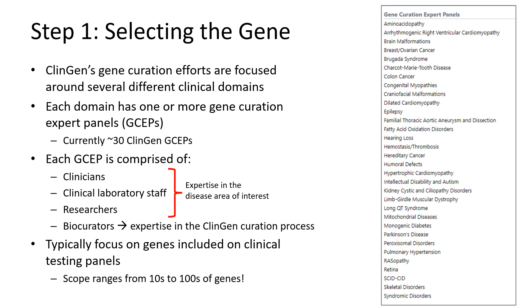First, I want to walk you through how ClinGen decides which genes and diseases to evaluate. Truly, the first step in the ClinGen gene curation process is selecting the genes. Within ClinGen, our gene curation efforts are focused around several different clinical domains: cardiovascular disorders, hereditary cancer, neurodevelopmental disorders, etc. Each domain may have one or more gene curation expert panels, or GCEPs, focused on specific disease areas therein — for example, the neurodevelopmental CDWG has GCEPs focused on intellectual disability, autism, and epilepsy. Each GCEP is comprised of experts within the disease area of interest, including clinicians, clinical laboratory staff, and researchers, as well as biocurator experts in the ClinGen curation process. Together, they review genes relevant to their disease area of interest, typically focusing on genes included on clinical testing panels, with scope varying from tens to hundreds of genes.